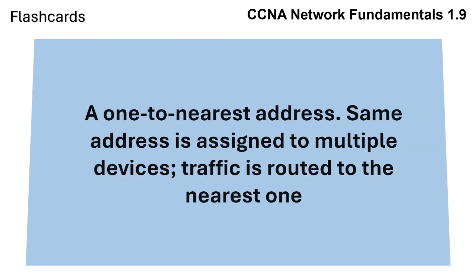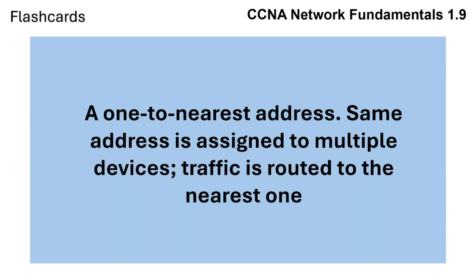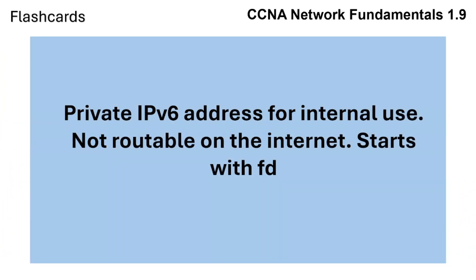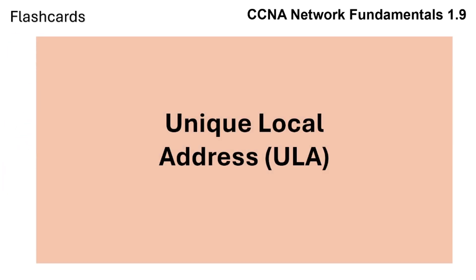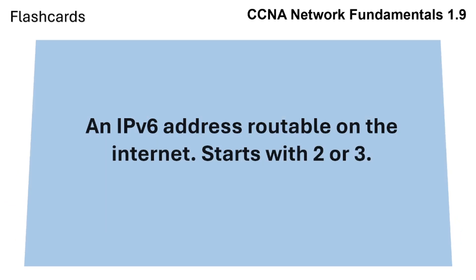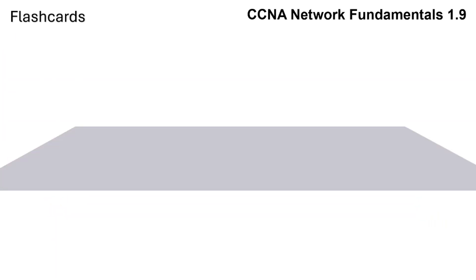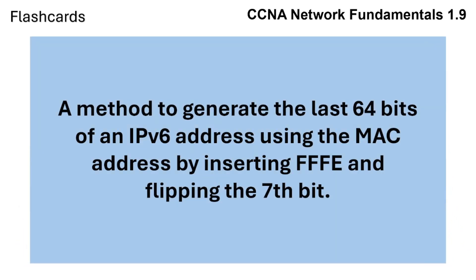Anycast is a one-to-nearest address where the same address is assigned to multiple devices and traffic is routed to the nearest one. Unique Local is a private IPv6 address for internal use, not routable on the internet, and starts with FD. Global Unicast is an IPv6 address routable on the internet and starts with 2 or 3. Modified EUI-64 is a method to generate the last 64 bits of an IPv6 address using the MAC address by inserting FFFE and flipping the 7th bit.